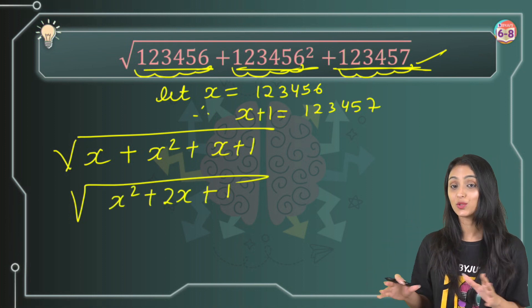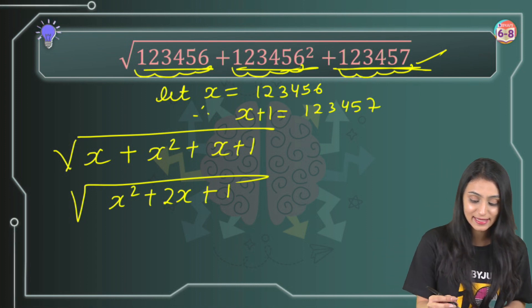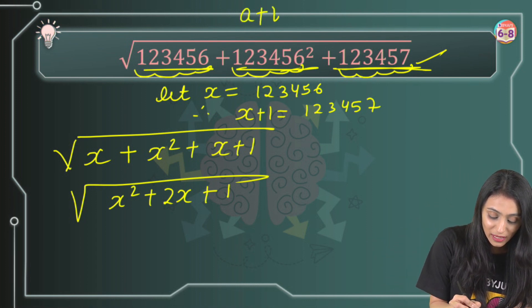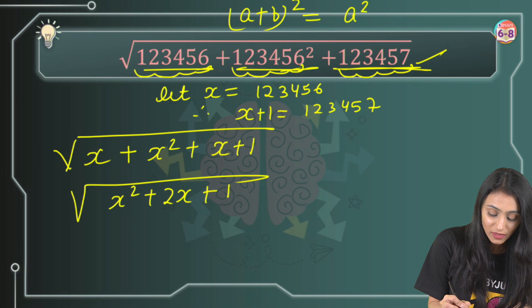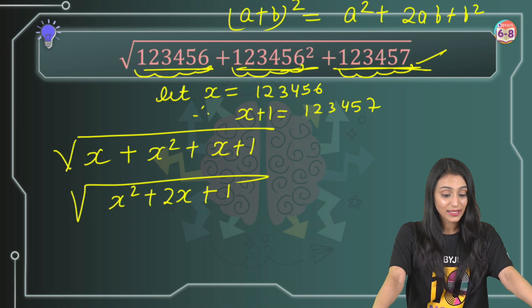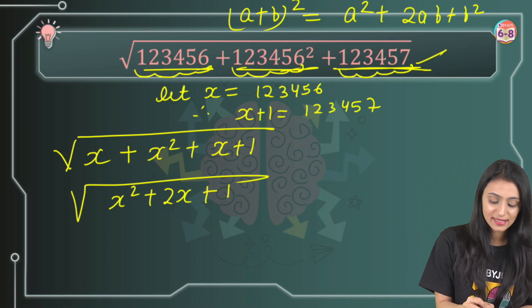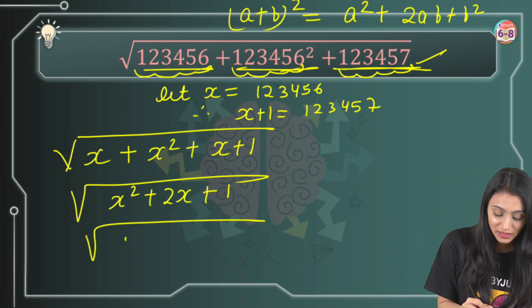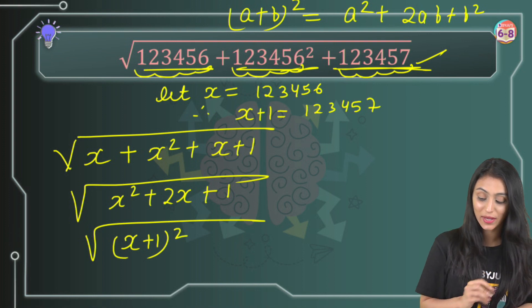Now, I hope that you all are aware of the algebraic identities. This is nothing, but it is resembling this identity. If you see, a plus b whole square equals a square plus 2ab plus b square. Right? So here I can simply say that this is nothing but x plus 1 whole square.